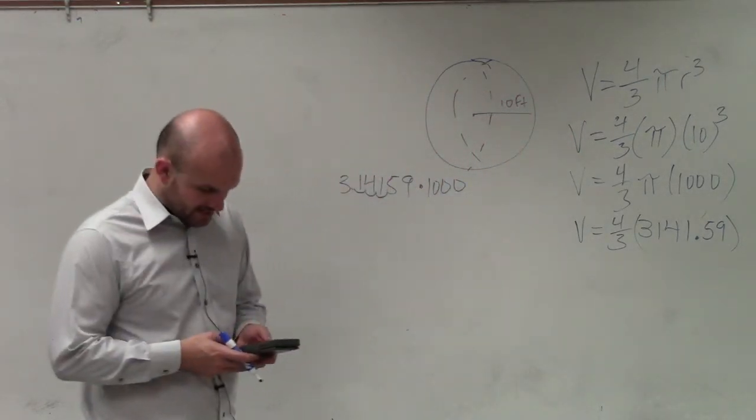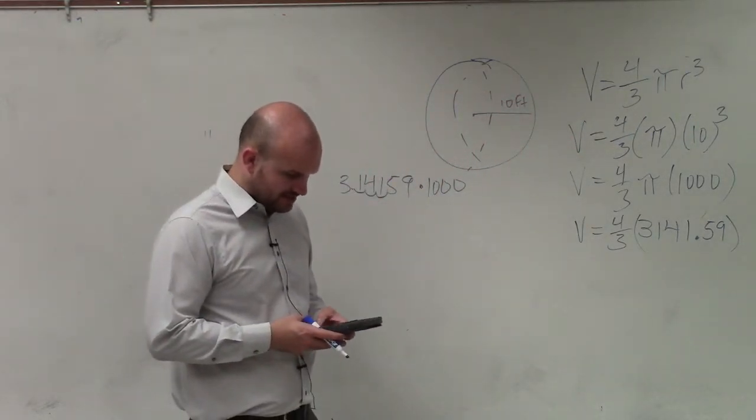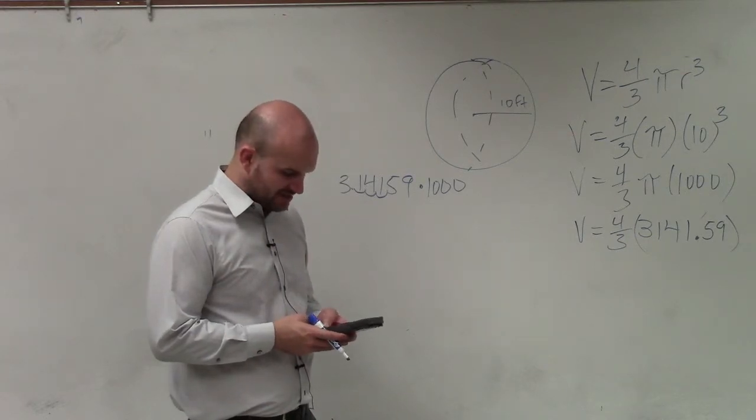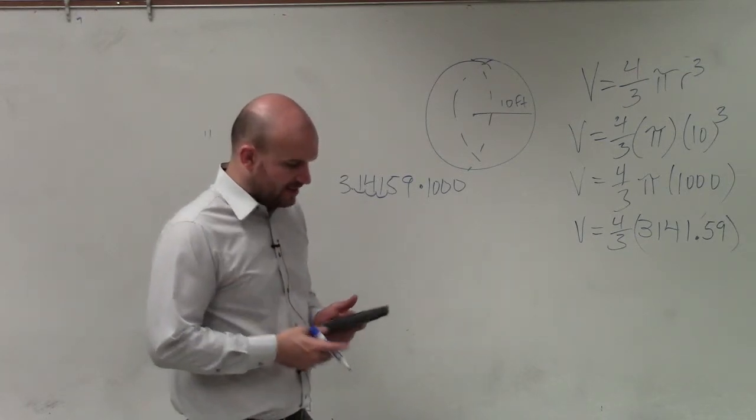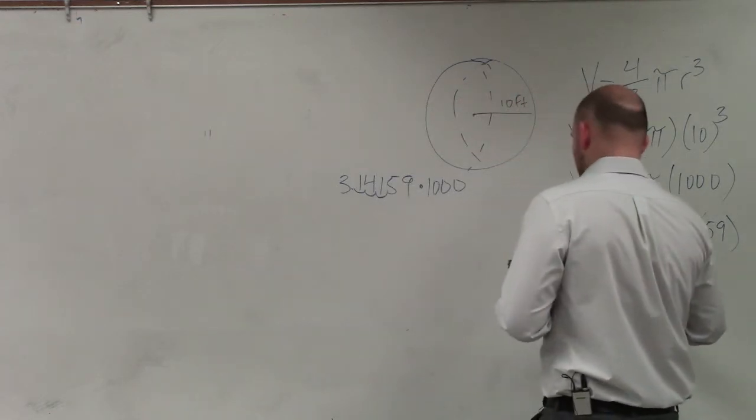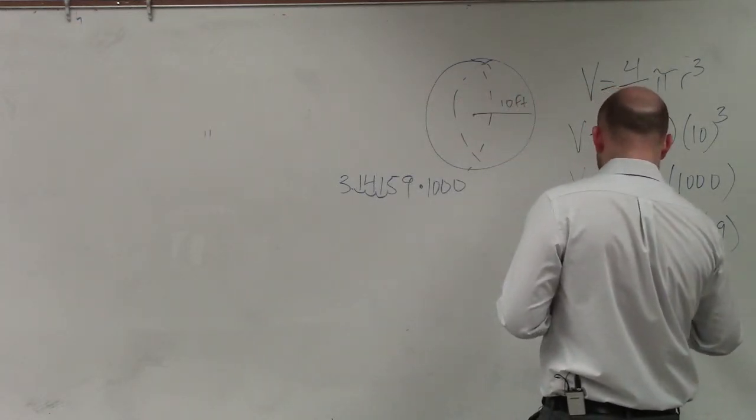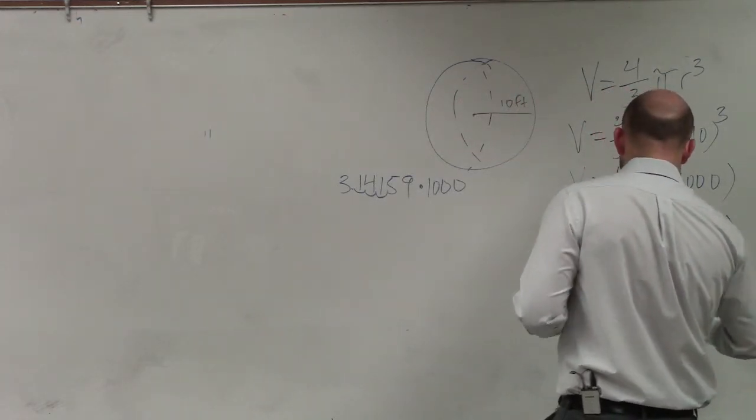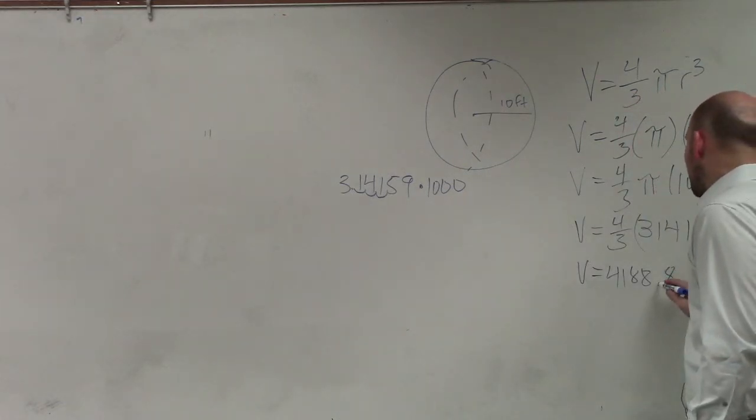So I do π times 1,000 times, in parentheses, 4 divided by 3. And I get my volume equals 4,188.79, which rounded to the tenth would be 0.8.